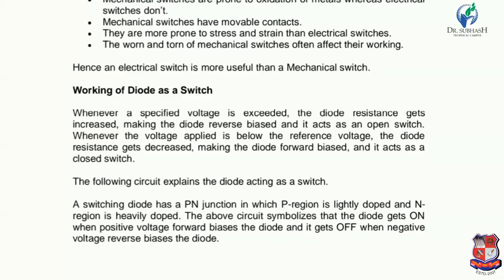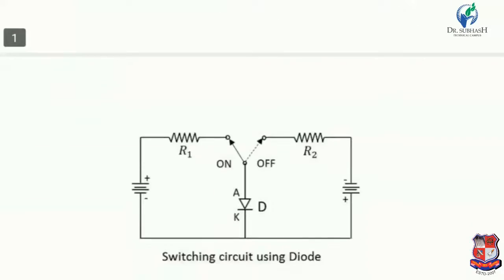Now let us discuss the switching circuit using a diode. In the circuit, the anode terminal is connected to the positive terminal and the cathode terminal is connected to the negative terminal, placing the diode in forward bias — the diode is in ON condition. On the contrary, when the negative terminal is connected to the anode and the positive terminal is connected to the cathode, the diode is in reverse bias and cannot conduct — no current flows through it. This is the basic fundamental of forward bias and reverse bias.